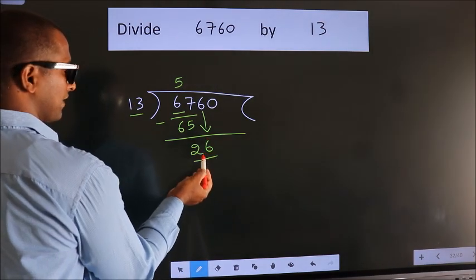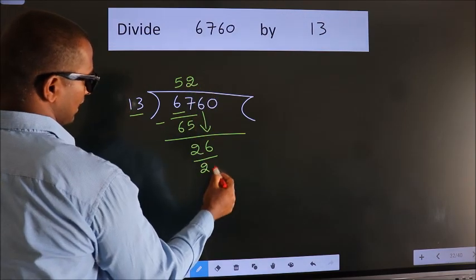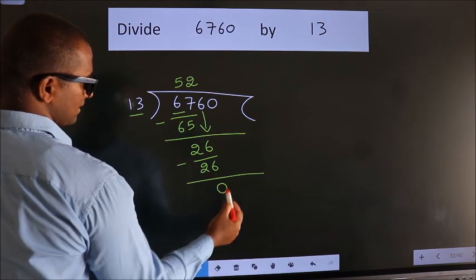When do we get 26? In 13 table, 13 twos, 26. Now we subtract. We get 0.